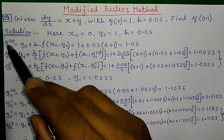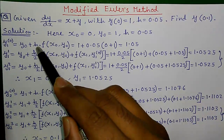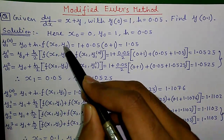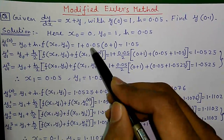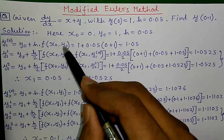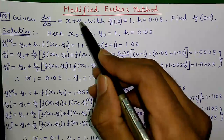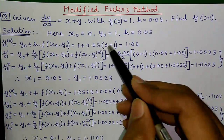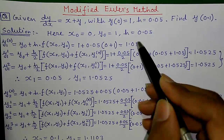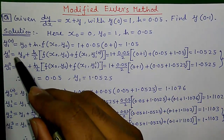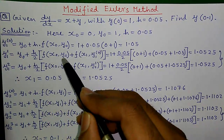Here is the Modified Euler's formula. The predictor step: y1(0) equals y0 plus h into f(x0, y0). So y0 is 1, plus h is 0.05, into the function — our original expression. We put x0 plus y0 here, so x0 is 0 plus y0 is 1, which gives 1.05.